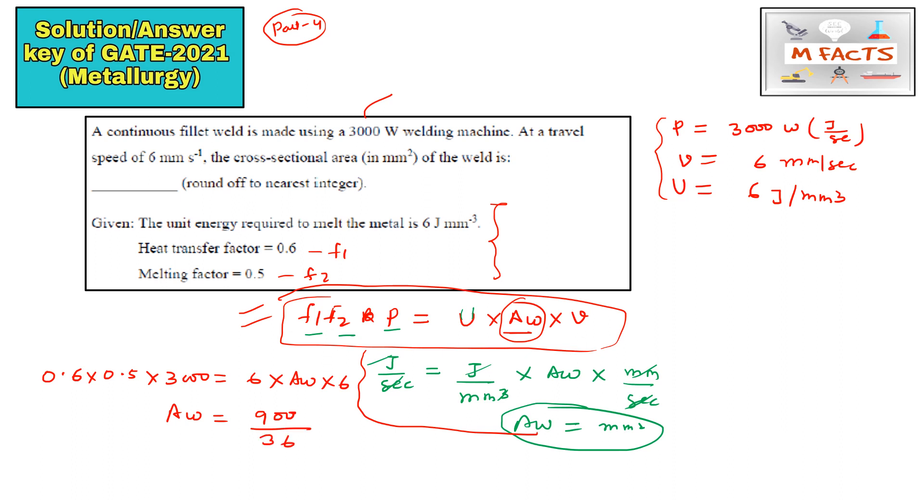So it will be equals to 25 mm square. We need not to change the unit because we already did the unit conversion here. We find that all the units are correct, so we need not to convert any unit because they all are given in mm or in seconds. This area will be equals to 25.